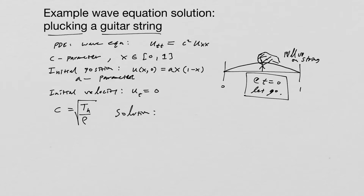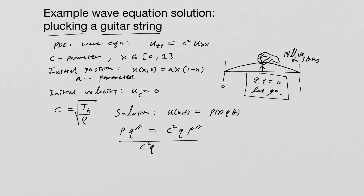With all those things put together, let's see if we can come up with a solution. We know we have to use separation of variables. So U(X, T) is going to be equal to P(X) times Q(T). If we plug it in, we get Q double prime times P equal to C squared Q times P double prime. Dividing everything by Q and P, we get Q double prime over C squared Q equals P double prime over P, which we set equal to the constant lambda — our eigenvalue.